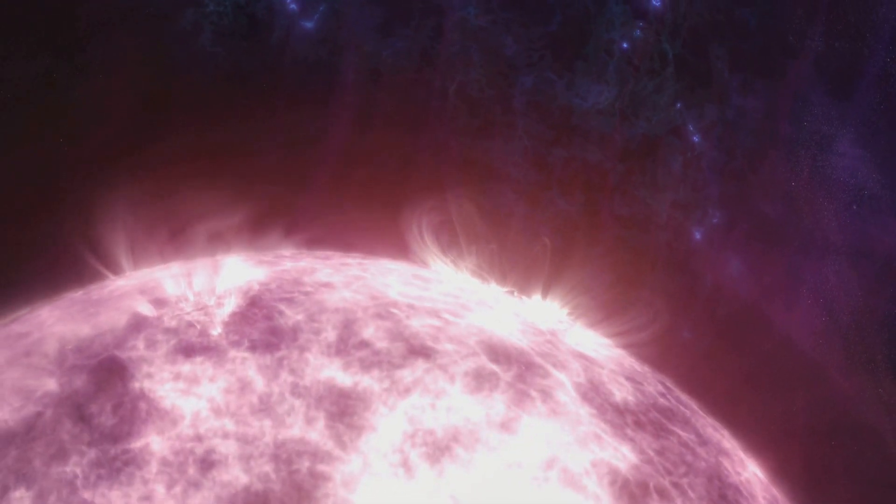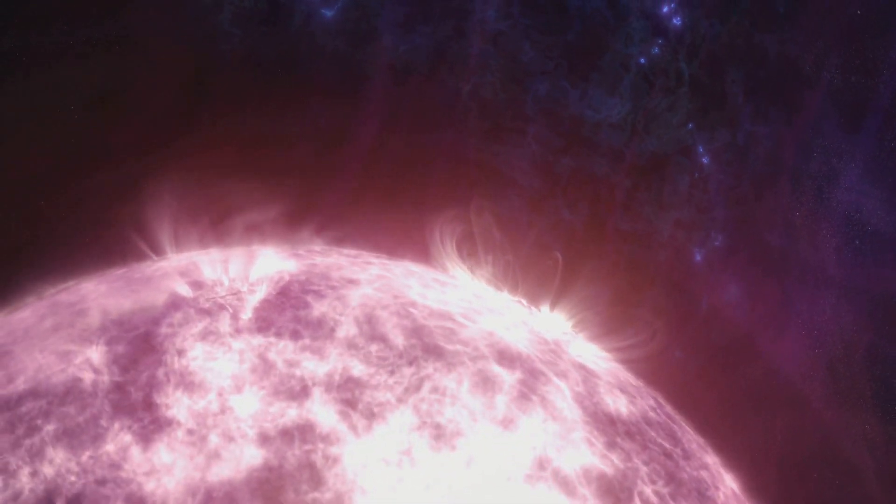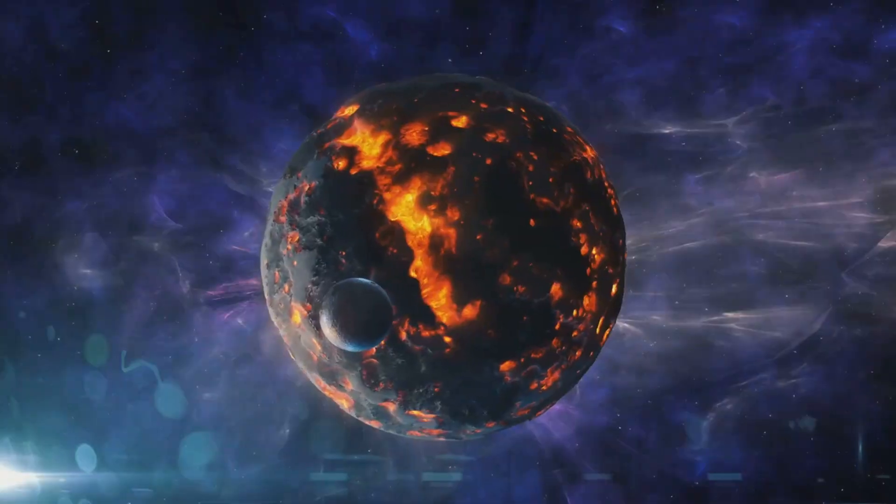But here's the thing about Proxima Centauri. It's a flare star. This means it can increase its brightness dramatically in a matter of minutes due to magnetic activity on its surface. These flares can be a hundred times more powerful than those from our sun, making this seemingly calm star a rather volatile neighbor. Despite its small and cool nature, Proxima Centauri holds a fiery secret.